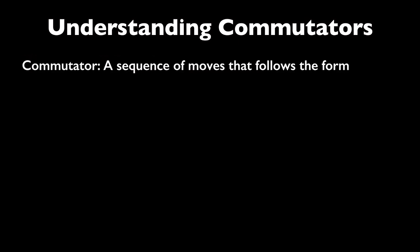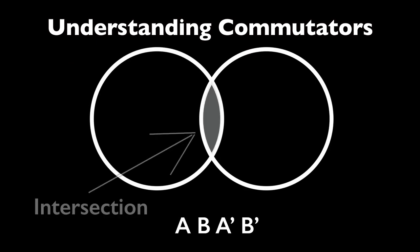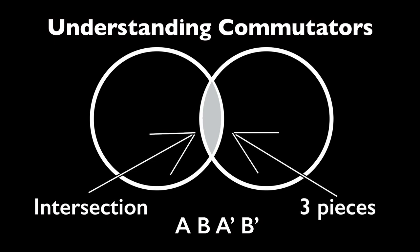A commutator is a sequence of moves that follows the form ABA'B'. For example, if A was RDR' and B was U, then the commutator is ABA'B', or RDR'U'RD'R'U'. Due to the laws of the cube, if we do ABA'B', only the pieces caught in the intersection of A and B will be affected. Because of this property, we can use commutators to cycle 3 pieces at a time without disturbing the rest of the cube.